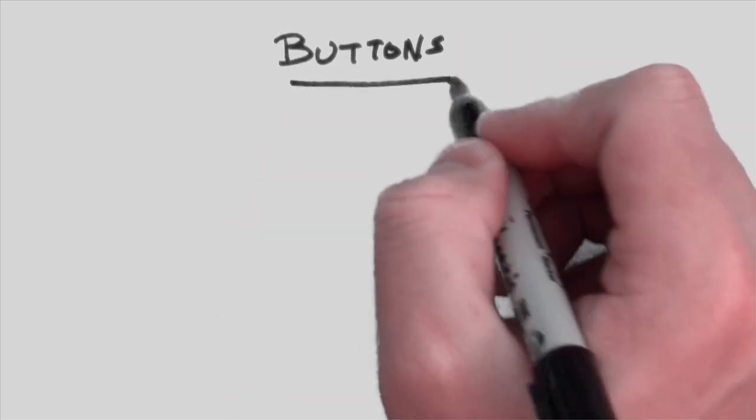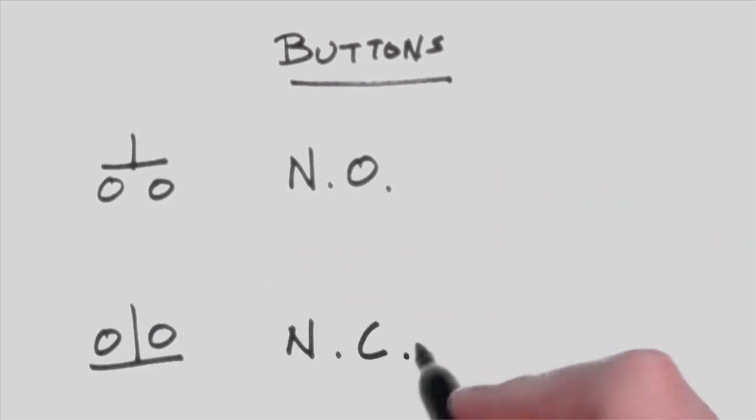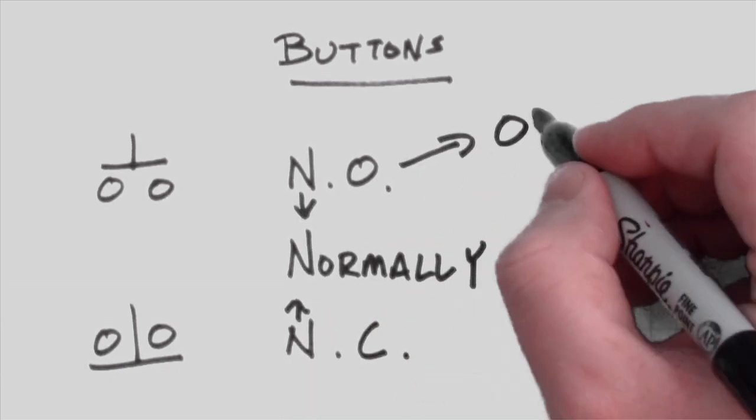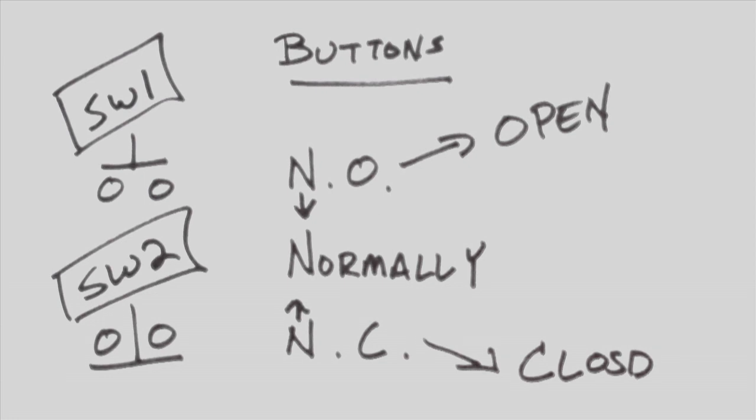Push buttons will be drawn differently, depending on whether they are normally open or normally closed. N-O and N-C do not actually refer to the designators, but they're just the type of switch they are. The designator for a button is SW.